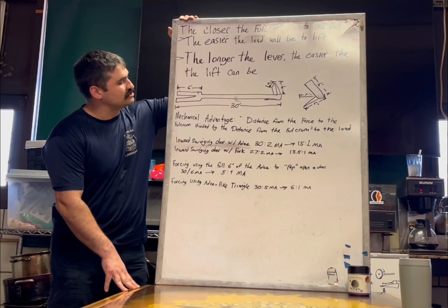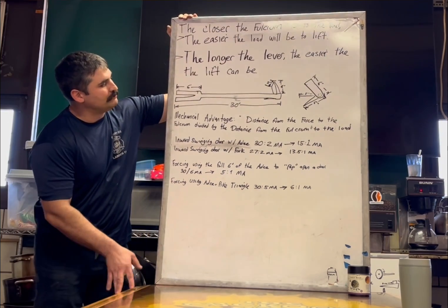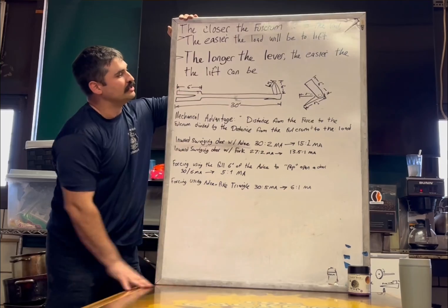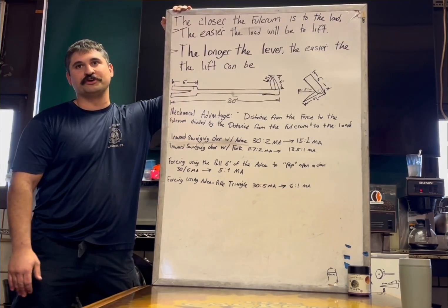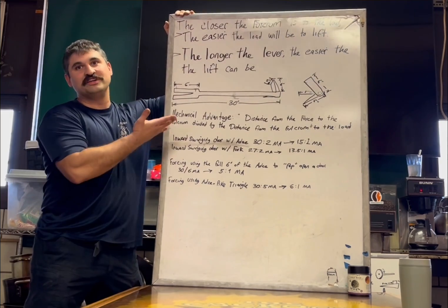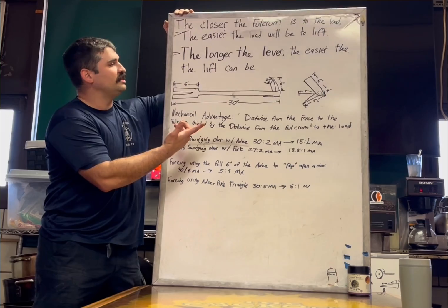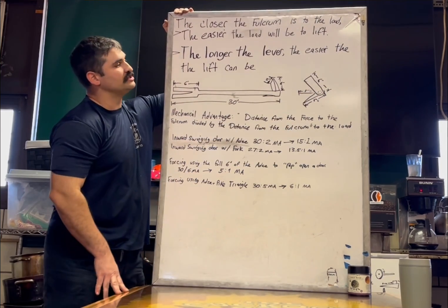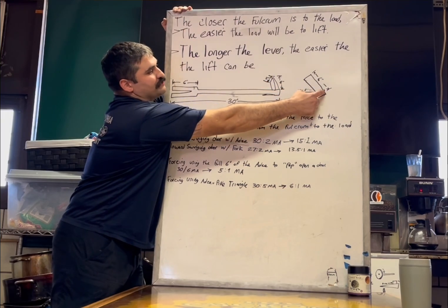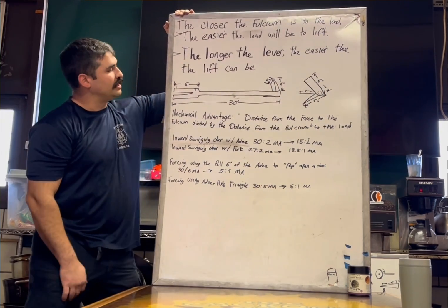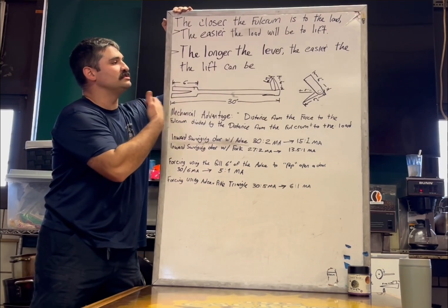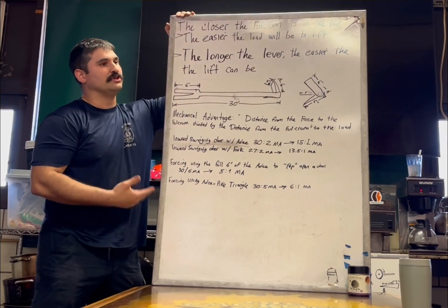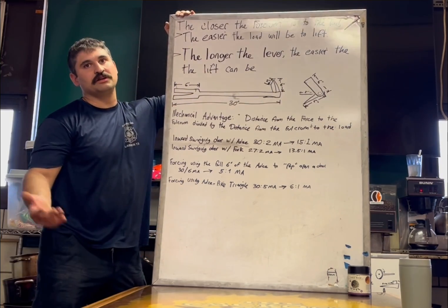Real quick, let's talk about the mechanical advantage definition. The actual formula is the distance from the force to the fulcrum divided by the distance from the fulcrum to the load. It makes more sense when we talk about it in Halligan terms. Our Halligan bars are 30 inches long. The adze is 2 inches wide, and it's 6 inches long. The pike from end to end is 6 inches long. Both of those are 6 inches. We talk about the adze-pike triangle. It's 5 inches from that shaft to where the base of those would meet. So, we can base some of our mechanical advantages off of these lengths. Most of these are going to be divided by 30 inches, because the Halligan bar is 30 inches long. So, just keep in mind - the longer the lever, the better it's going to be. The closer the fulcrum is to the load, the easier the lift's going to be.